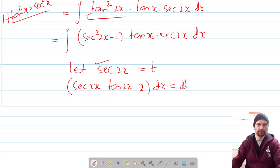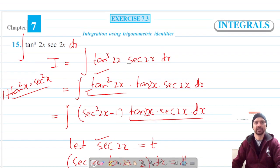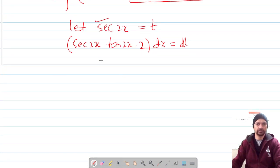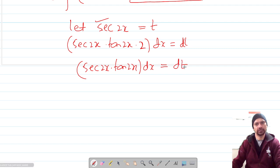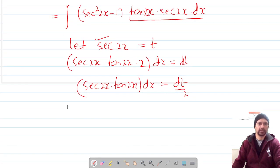Which gives us, because we have tan(2x), so now sec(2x)·tan(2x) with differential element dx should be equal to dt by 2 and we are ready to put our integral in terms of t.